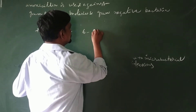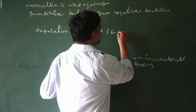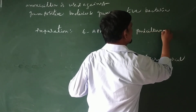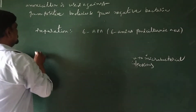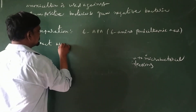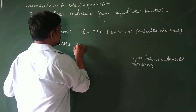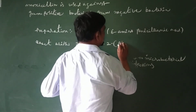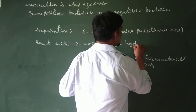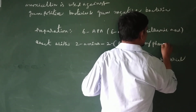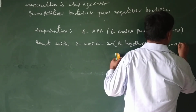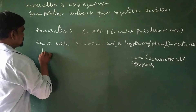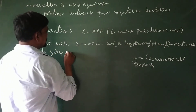6-APA, which is 6-amino penicillanic acid, is reactivated with 2-amino and 2-parahydroxy phenyl and acetic acid — that is, parahydroxyphenylacetic acid — to give amoxicillin.